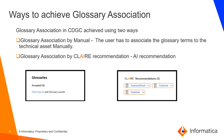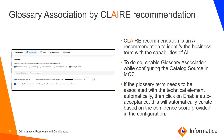Next we are going to see more about CLARE recommendation in CDGC. CLARE recommendation is an AI recommendation to identify the business term to the technical data. It suggests or curates the business term based on the column or table name of the technical asset. To use this feature, enable Glossary Association while configuring the catalog source in Metadata Command Center. If you want the Glossary term to be automatically associated with the column or table, click on 'Enable Auto Acceptance' under the Glossary Association tab. This will automatically curate the Glossary term based on the confidence score. If the match percentage is greater than or equal to the acceptance score, the particular Glossary will be automatically associated to the technical asset.